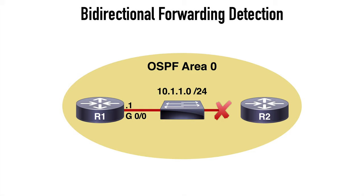R1 is going to continue to send traffic in a situation we call black holing. The traffic goes over to the layer 2 switch even though it can't reach the destination of R2, and it will do that until our configured protocol timers expire and let R1 know that the OSPF neighbor is down. We do have options for lowering those OSPF timers to detect a failure quicker, but nowhere near as quickly as bi-directional forwarding detection offers.